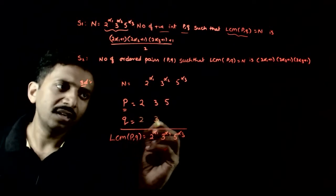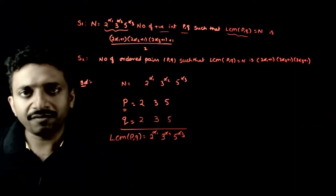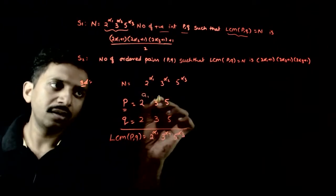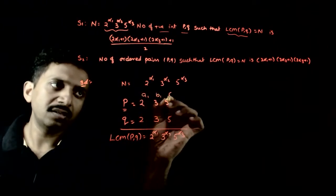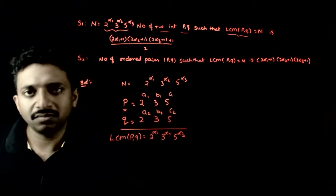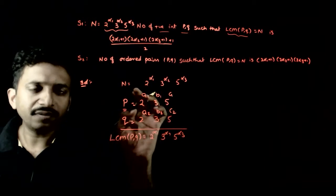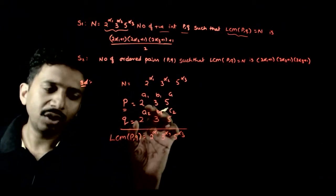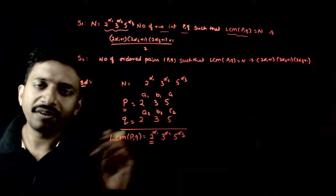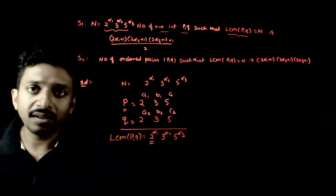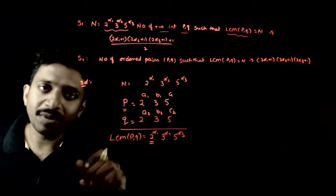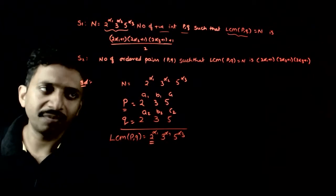So p = 2^a1 · 3^b1 · 5^c1 and q = 2^a2 · 3^b2 · 5^c2. For the LCM to equal 2^α1 · 3^α2 · 5^α3, the highest power in the LCM must match. The LCM takes the highest power of each prime from the two numbers, so max(a1, a2) must equal α1.